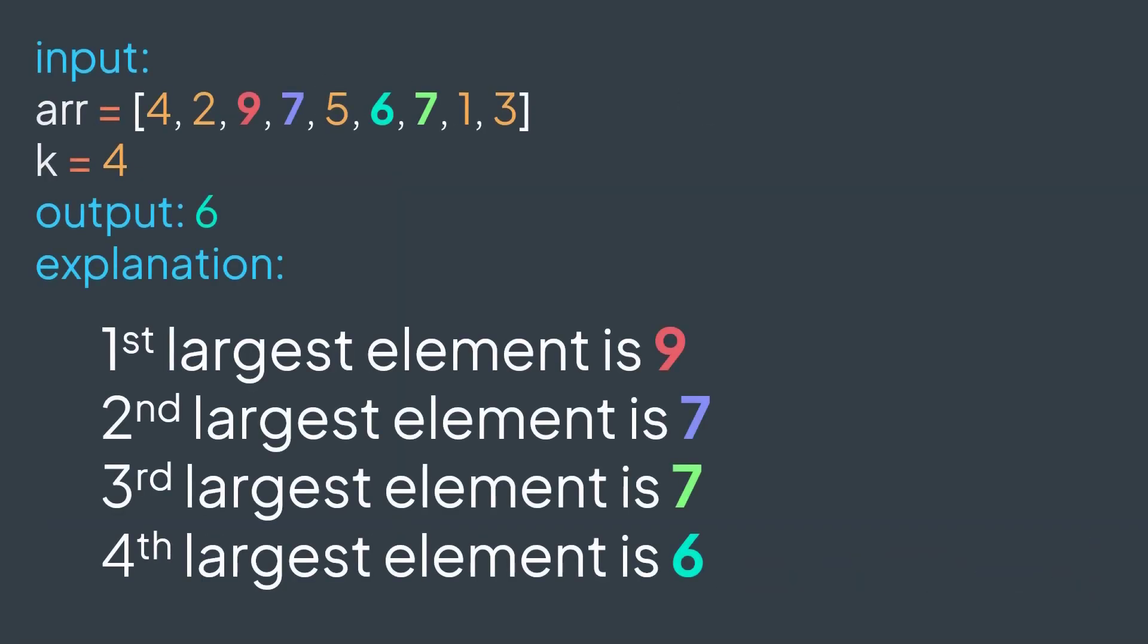For example, if we have arr equal to 4, 2, 9, 7, 5, 6, 7, 1, 3, and k equal to 4, the output should be 6.